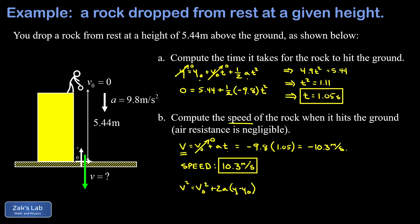And we know our initial velocity was zero. So that term is gone. We know our final position is zero. So that term is gone. So we get v squared is equal to twice the acceleration, which is negative 9.8, times the negative of y-naught, the negative of the initial height, so 5.44 meters. And when we smash all those numbers on the right, we get 106.6.